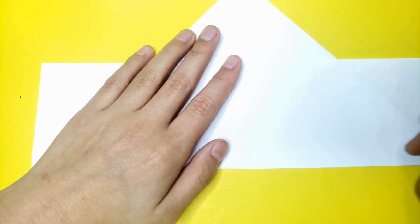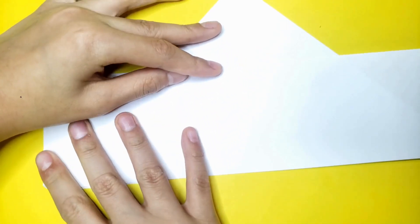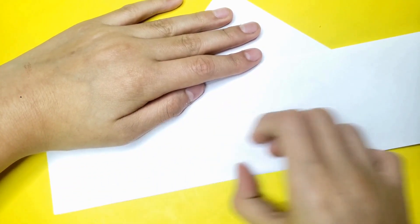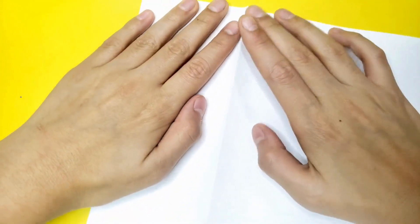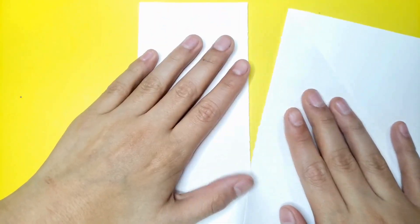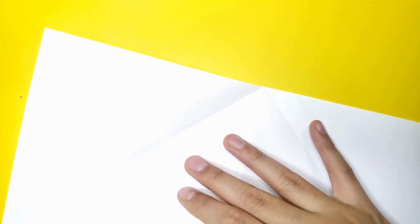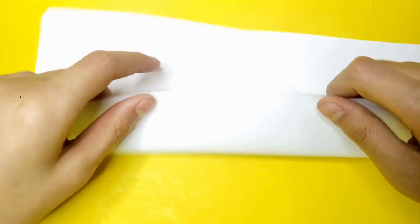You're going to fold this up. Then now, we're going to make sure it's creased sharply. Then, we're going to rip it. So now you're going to fold this paper in half.